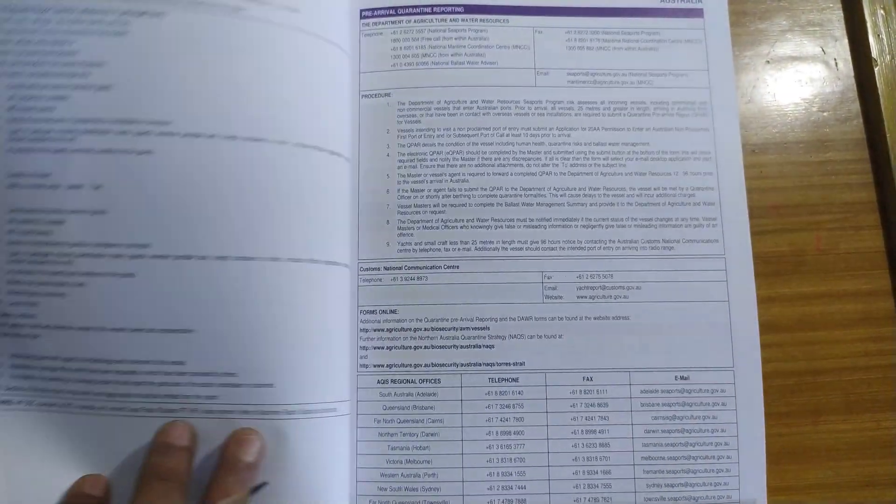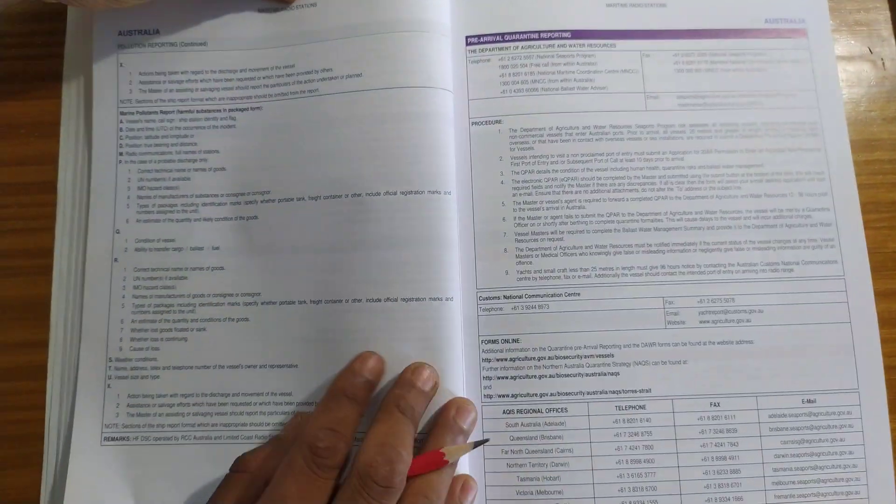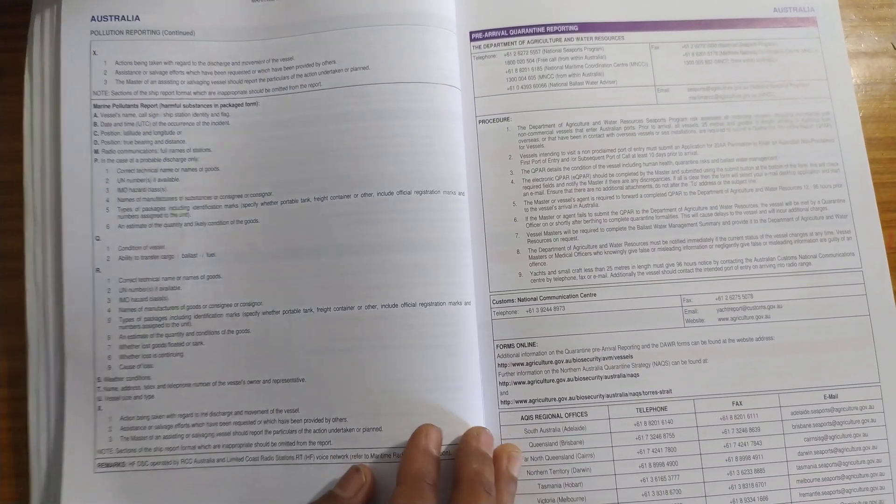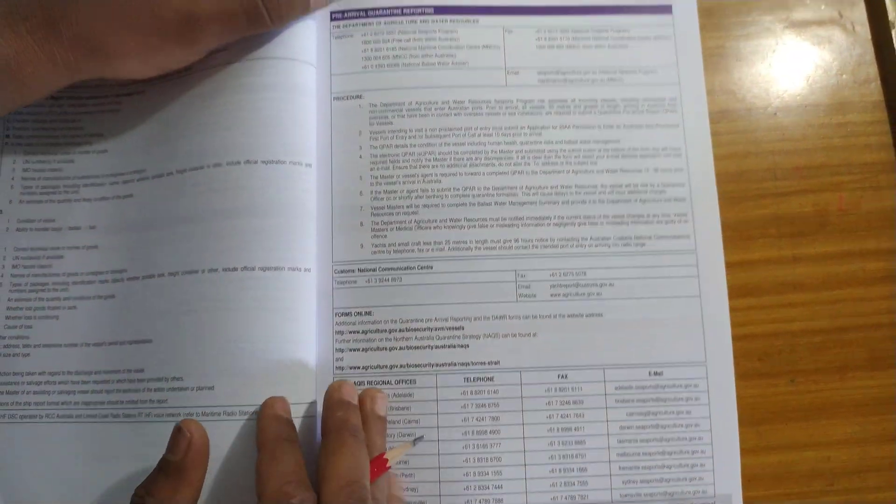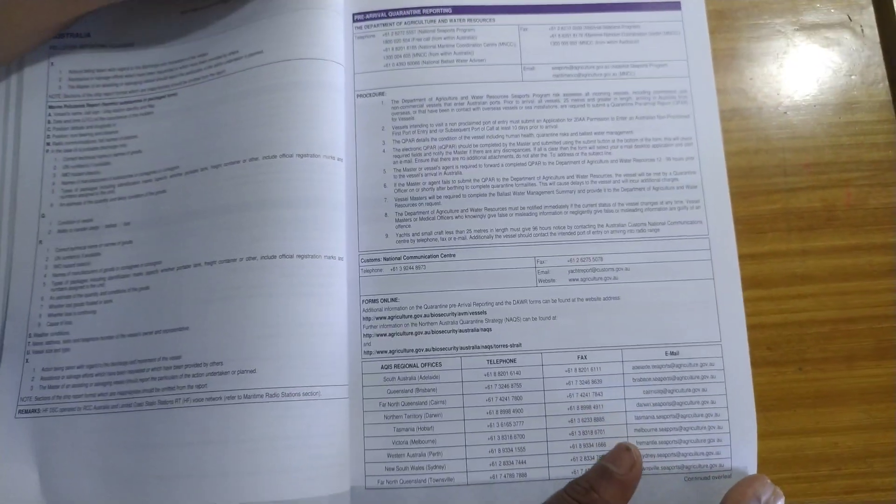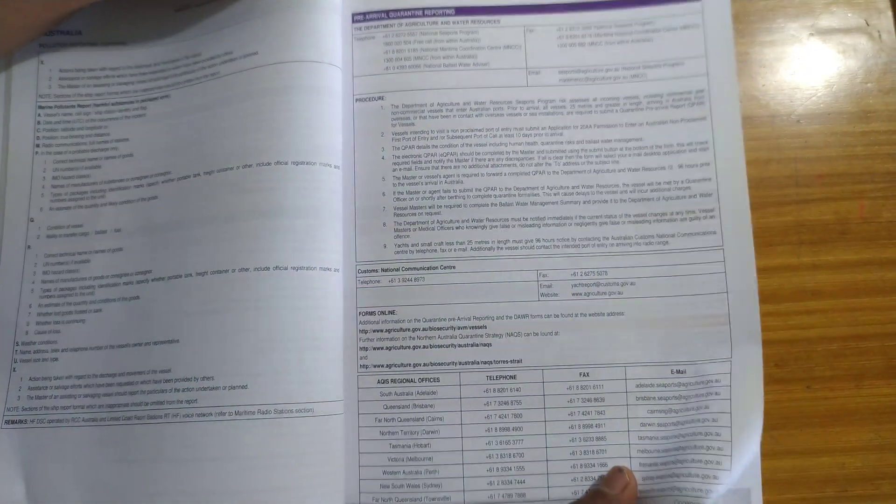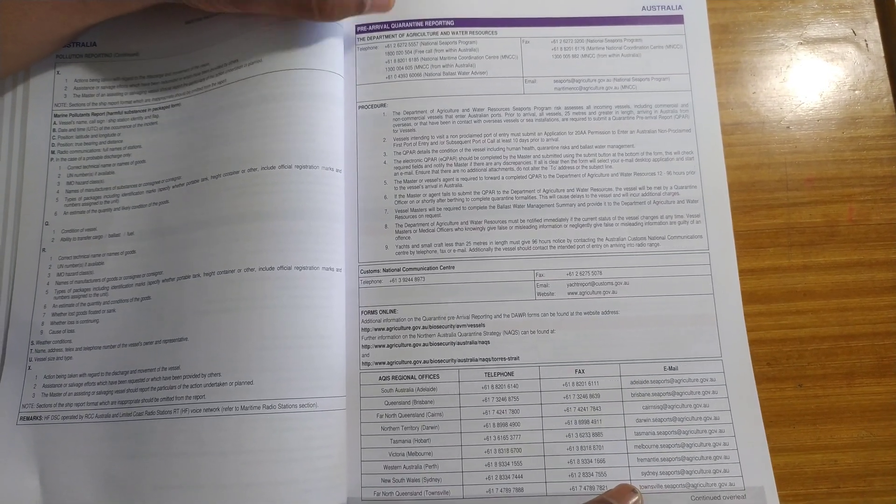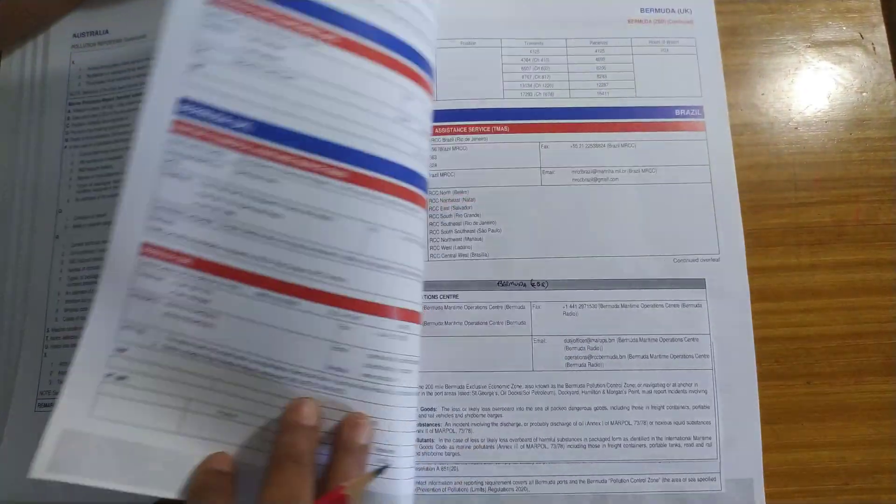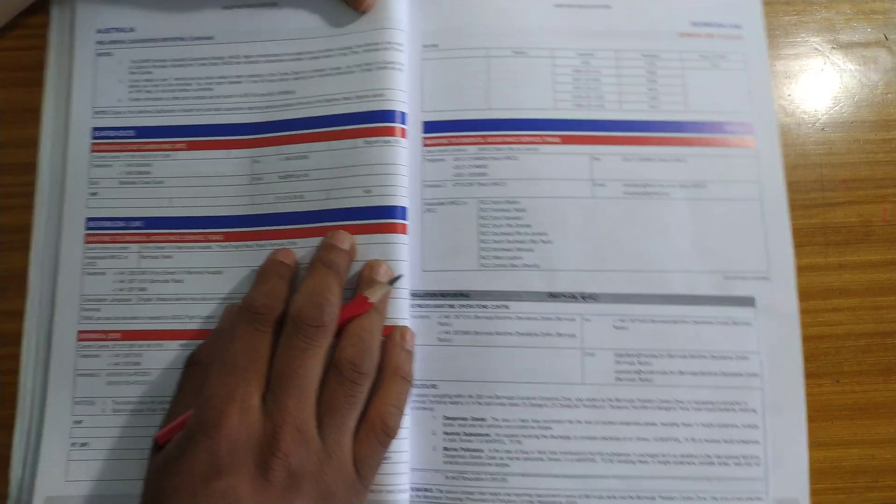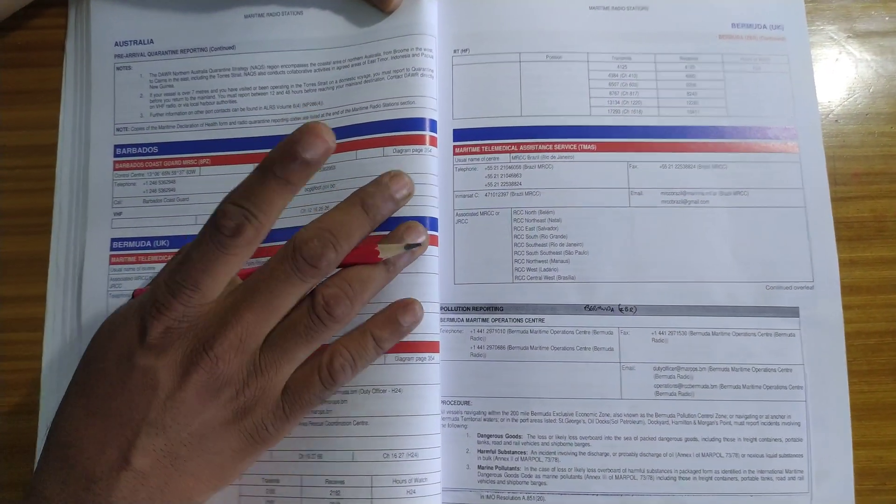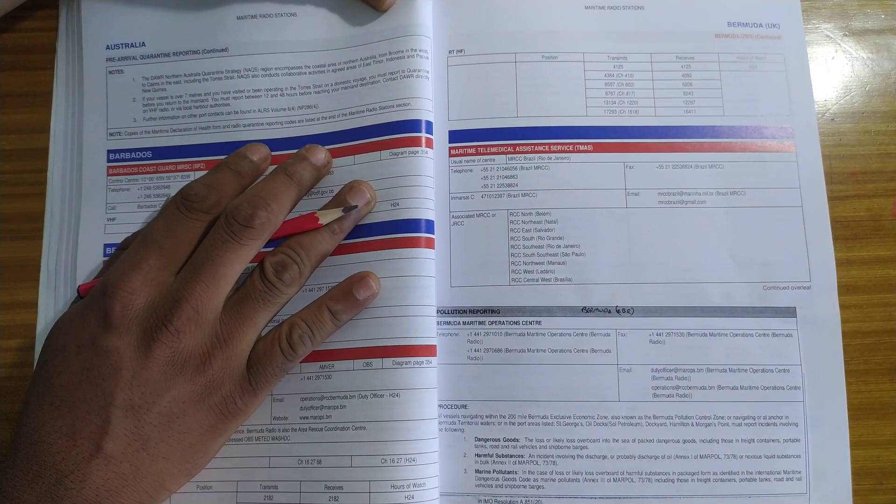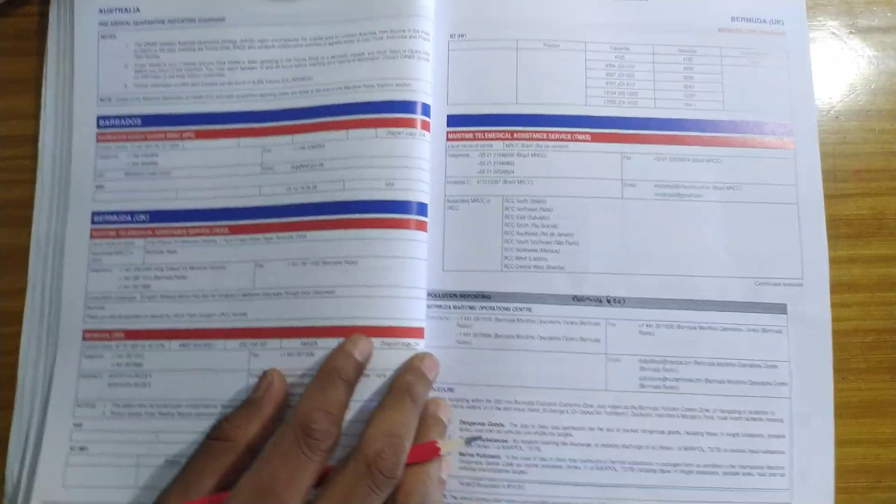It is a long list. After this comes the pre-arrival quarantine reporting. All the contact details, which documents are needed, everything is written. Finally, Australia is completed. So this is how you will use a maritime radio station for reporting all this.